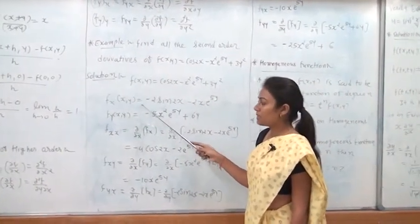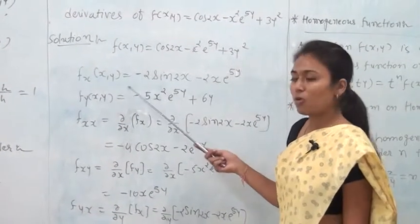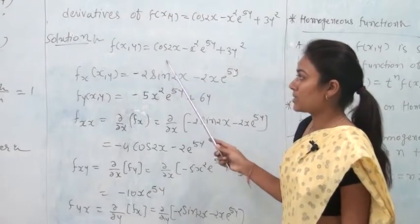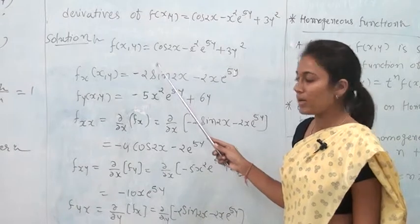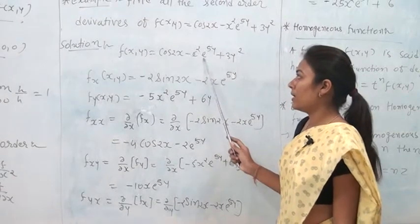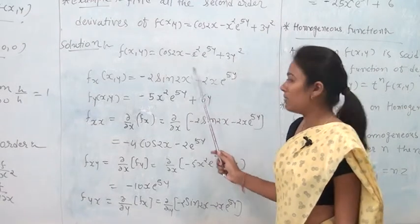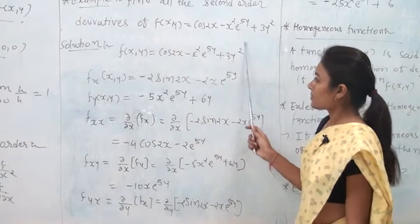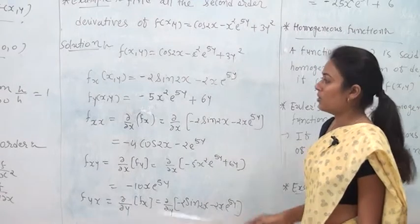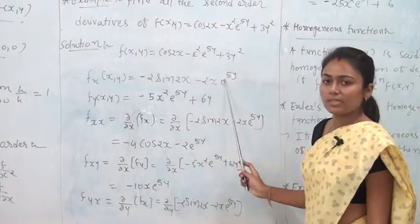Differentiating with respect to x (y is constant): derivative of cos 2x is −2 sin 2x; e^(5y) is constant so derivative of x² gives −2x; 3y² is a function of y only so its derivative is 0. Therefore f_x(x, y) = −2 sin 2x − 2x·e^(5y).